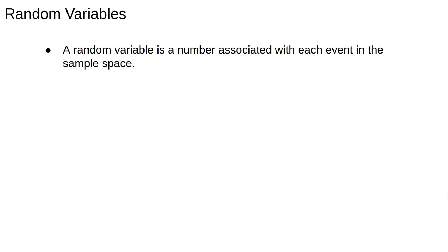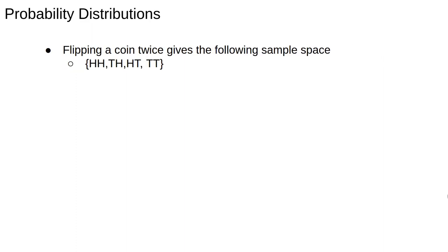A random variable is simply a number associated with each event in the sample space. For example, flipping a coin twice gives the following sample space: heads-heads, heads-tails, tails-heads, and tails-tails.